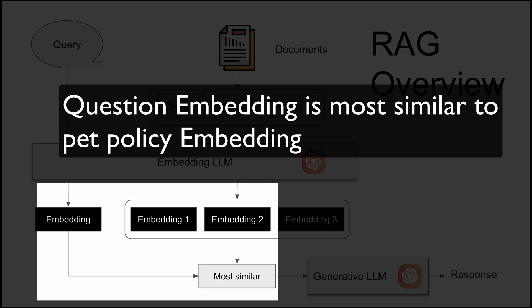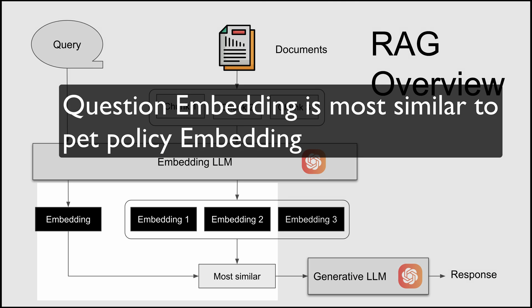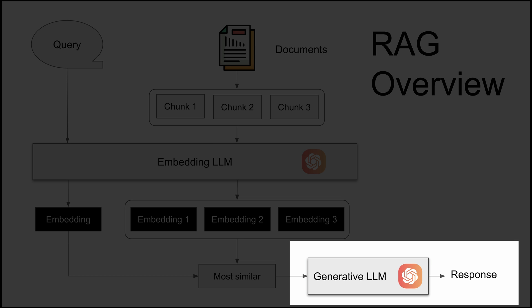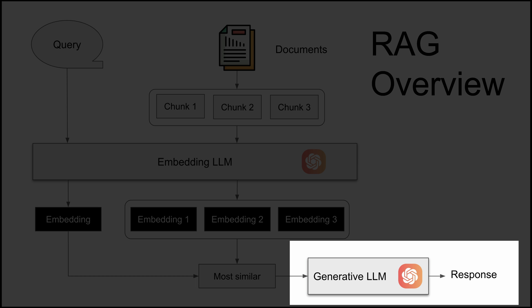In our example, my question about pets would find the embeddings related to pet policy. We then convert them back to text and pass both to a generative LLM, which performs the same function I did with ChatGPT. Let's look at an example.